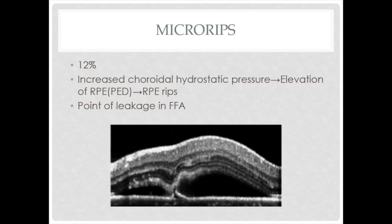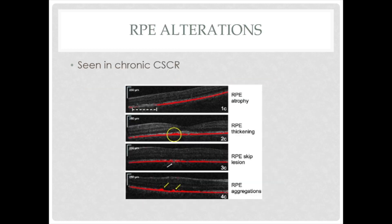Microribs are visualized in around 12% of cases. Increased choroidal hydrostatic pressure can lead to elevation of the RPE causing PED. With further increase in choroidal pressure, the RPE gives way, giving rise to RPE ribs — otherwise called microribs. These are the points of leakage in FFA. Other RPE alterations seen in chronic CSCR include RPE atrophy, RPE hypertrophy or thickening, skip lesions, or RPE aggregations.